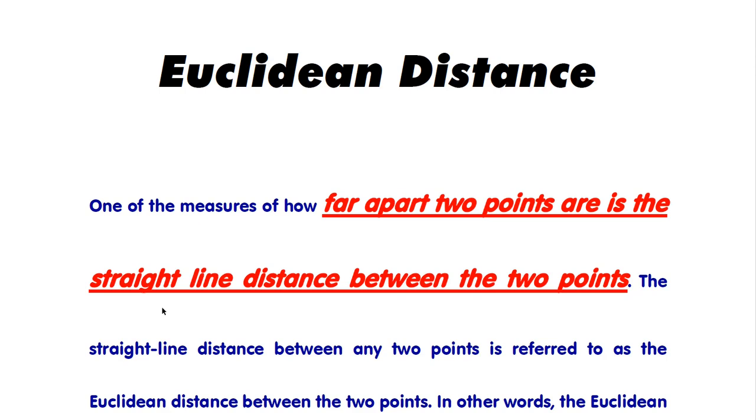One of the measures of how far apart two points are is the straight line distance between the two points. The straight line distance between any two points is referred to as Euclidean distance between any two points.